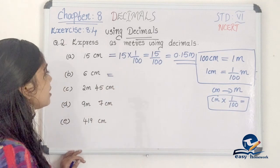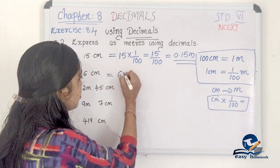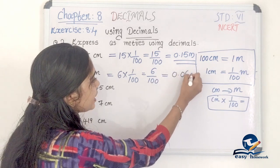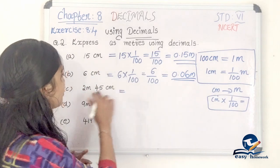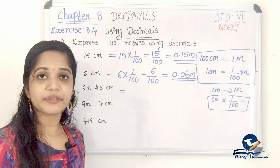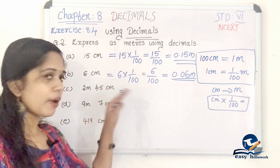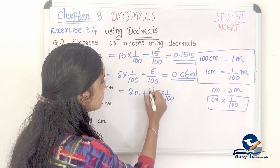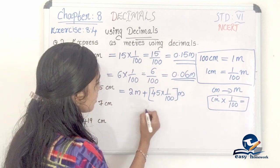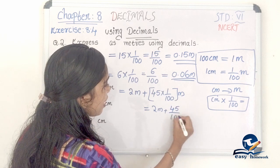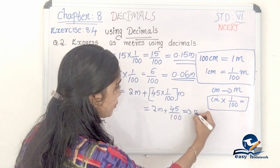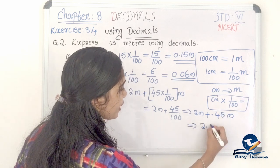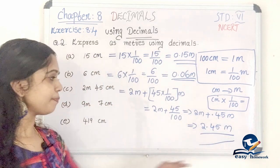Next: 6 centimeter. 6 centimeter into 1 by 100 equals 6 by 100, which is 0.06 meter. Next: 2 meter 45 centimeter. 45 centimeter into 1 by 100, so 2 meter plus 45 divided by 100 equals 2 meter plus 0.45 meter, which is 2.45 meter.